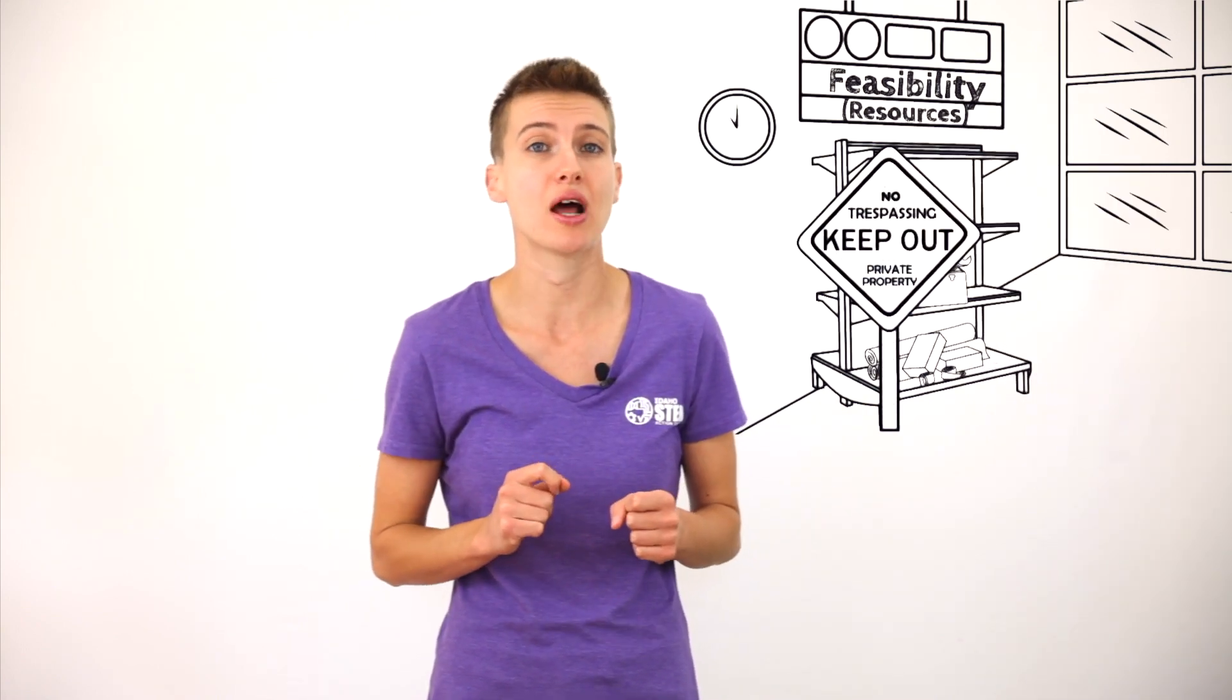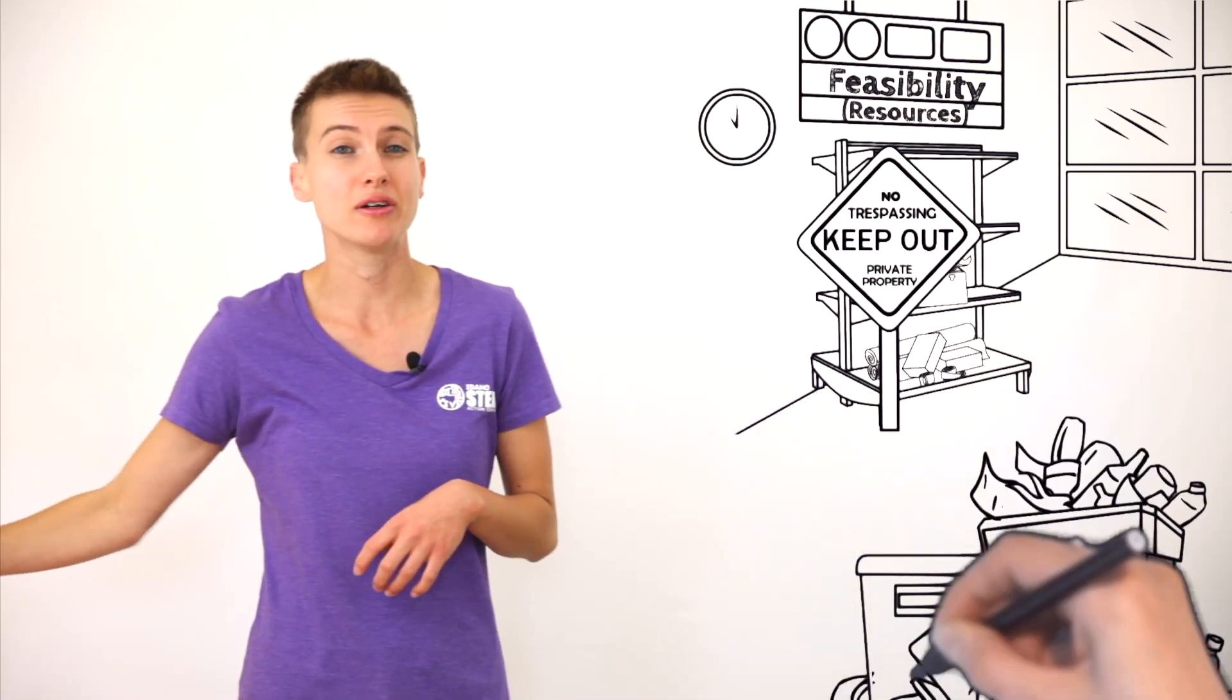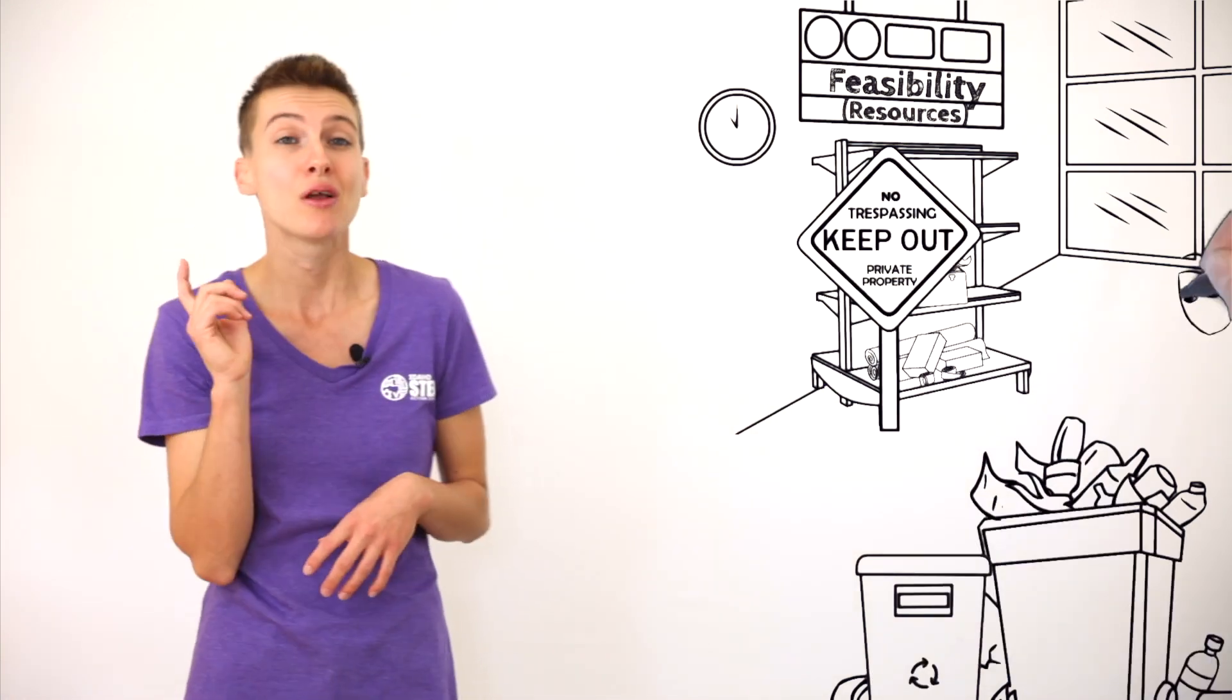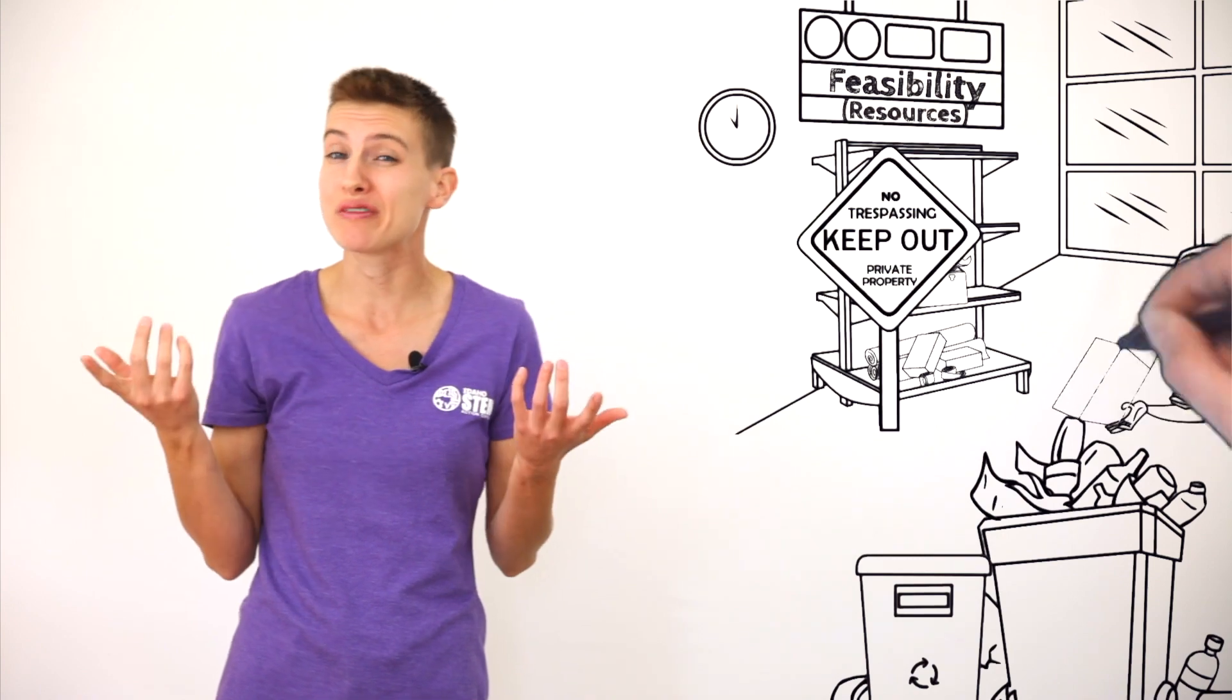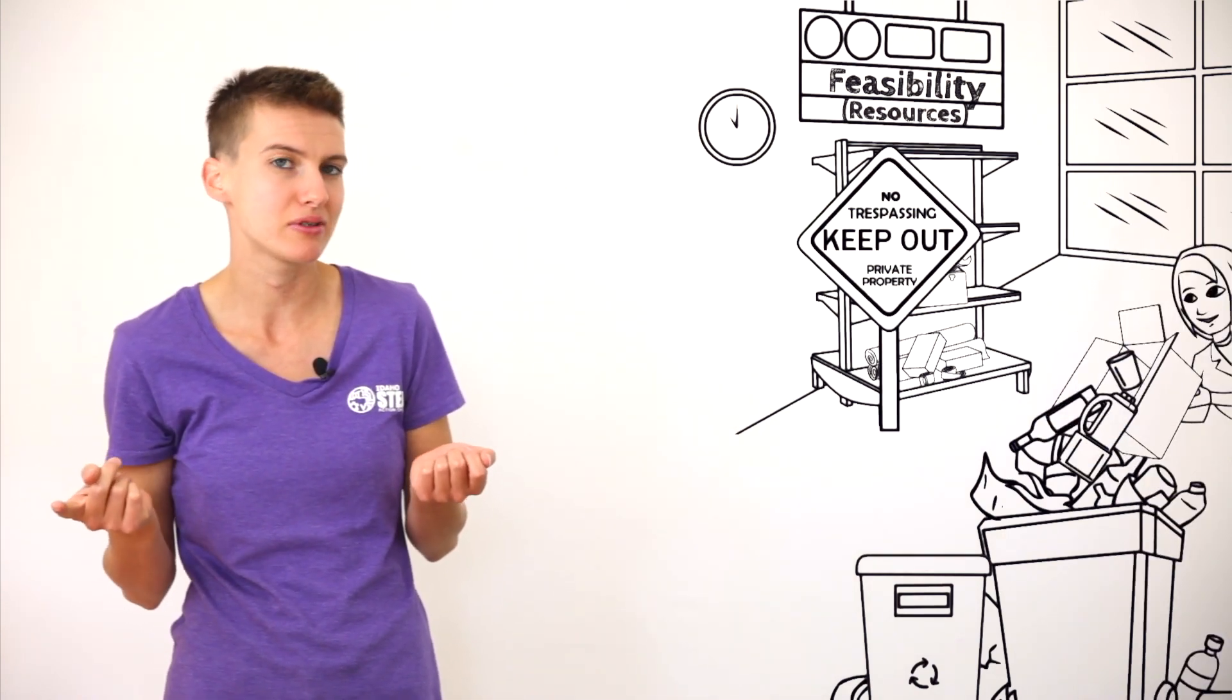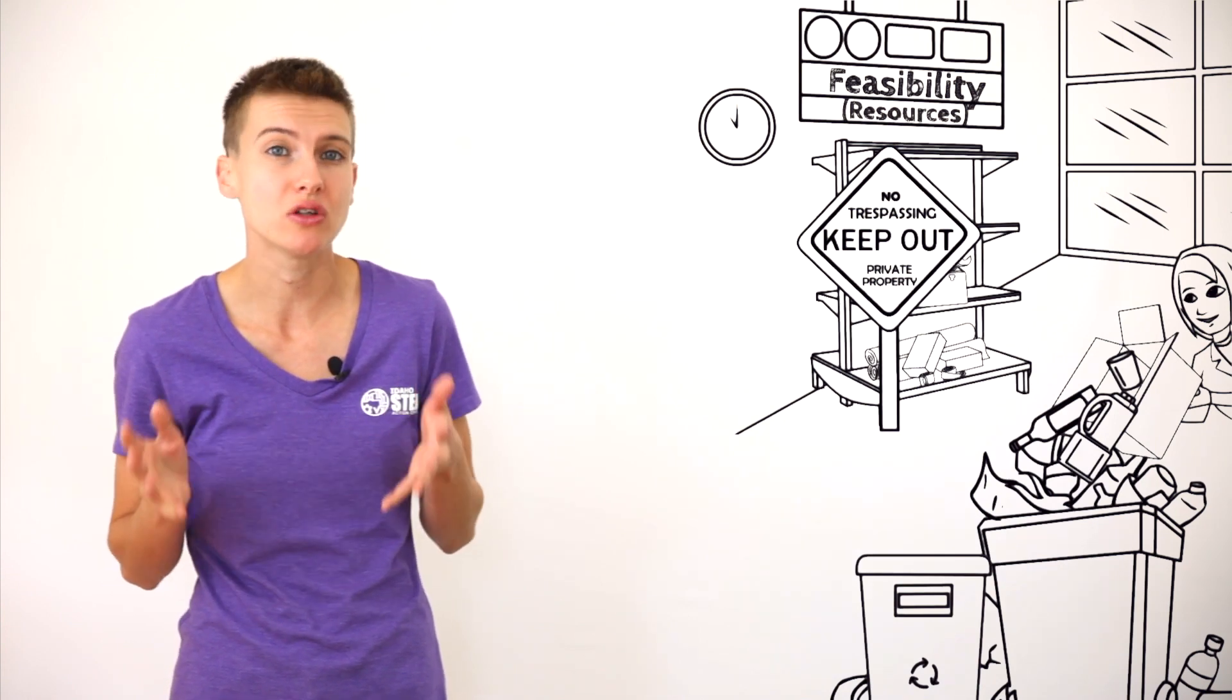But it is also an opportunity to think creatively about the resources you do have. For example, if you're like a lot of small communities in Idaho, you might not have a public recycling program, which means people probably have a lot of materials like cardboard, tin cans, and plastic bottles lying around. Sometimes, it can be helpful to use what you have a lot of as a starting point for brainstorming an activity about a specific topic.